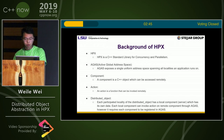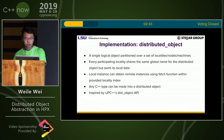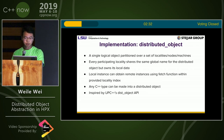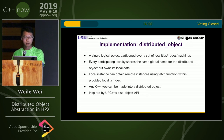I will give more details about the distributed object. As I said, it's a single object partitioned across a set of localities. We have local data in local localities, but it can be fetched using the fetch function with a provided locality index. The idea is inspired by UPC++ object API, which we then extended based on our needs.